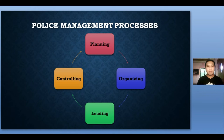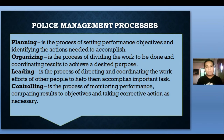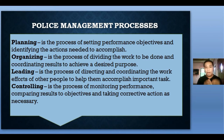There are four cyclical police management processes: planning, organizing, leading, and controlling. Planning is the process of setting performance objectives and identifying the actions needed to accomplish them. Organizing is the process of dividing the work to be done and coordinating results to achieve a desired purpose. Leading is the process of directing and coordinating the work efforts of other people to help them accomplish an important task. Controlling is the process of monitoring performance, comparing results to objectives, and taking corrective action as necessary.